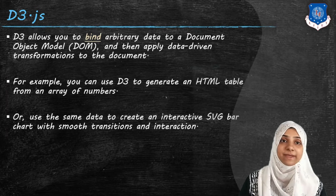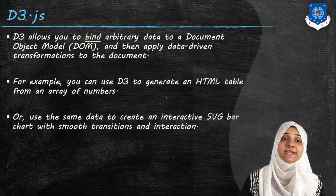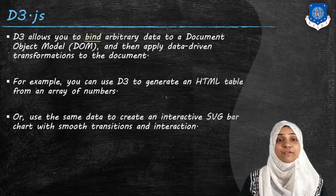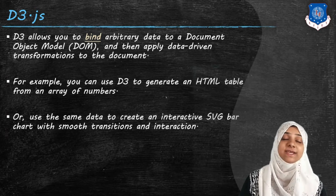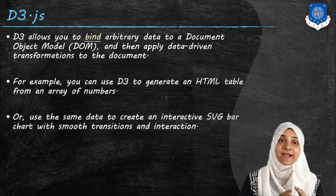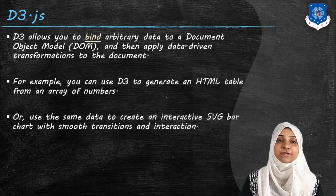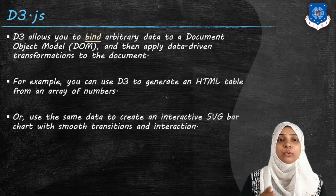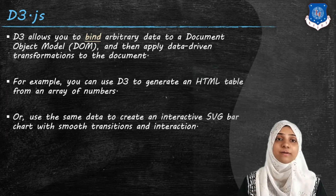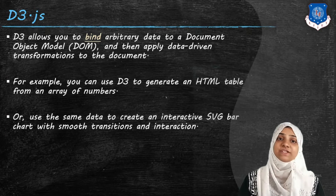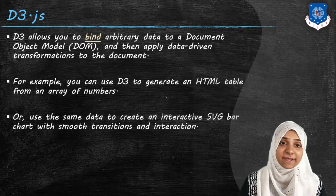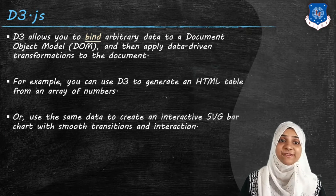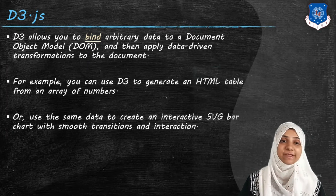Another example is that you can use the same data to create an interactive SVG bar chart with smooth transitions and interaction. For example, with an array of numbers, instead of displaying a table, you may want to display different circles or rectangles of different sizes that are interrelated with your data set. You can easily do this with the D3.js library.